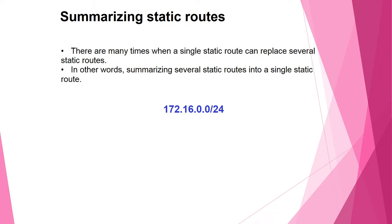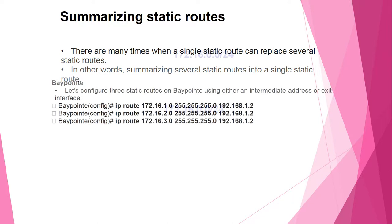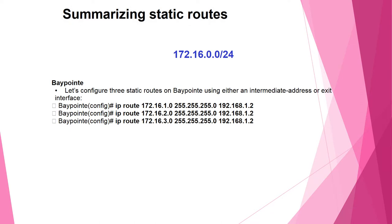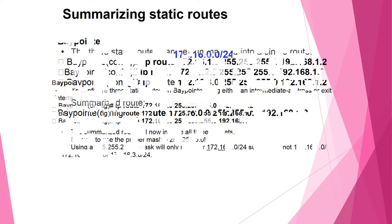Summarizing static routes: there are many times when a single static route can replace several static routes — in other words, summarizing several static routes into one. For example, three static routes to 172.16.1.0/24, 172.16.2.0/24, and 172.16.3.0/24, all with next-hop 192.168.1.2, can potentially be summarized. Each uses a subnet mask of 255.255.255.0 with the next-hop network address 192.168.1.2.